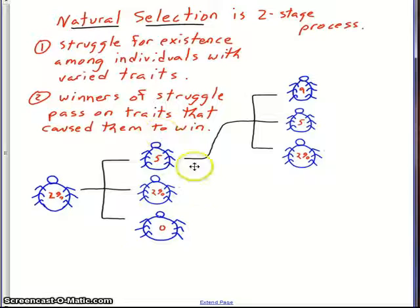And the second concept here is that the winners of the struggle pass on traits that caused them to win. So in our diagram here, in this generation, the five percenters are going to have a little bit of an advantage compared to the others—the two percenters and the zero percenters. They are going to be seen a little bit less by the predators, so they will be able to survive a little bit more than these and therefore have more babies.